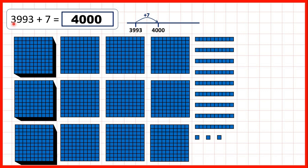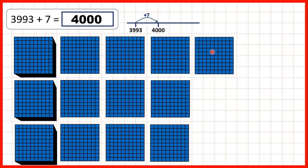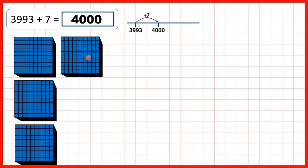Then our last question: we had 3,993 plus 7. When we add 1, 2, 3, 4, 5, 6, 7, we get 4,000. Now, that doesn't look like 4,000 at the moment because we haven't exchanged. But we do now have 10 ones, so we can exchange those for 1 ten. Because we have 10 tens, we can exchange those for 100. And finally, because we've got 10 hundreds, we can exchange those for 1,000, to give us 4,000 altogether.